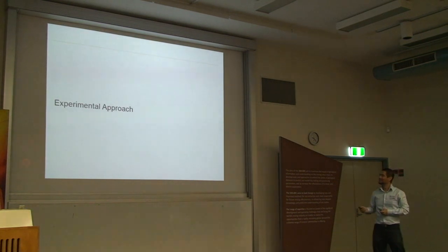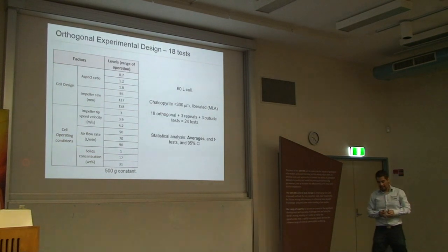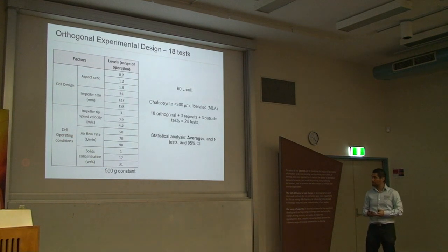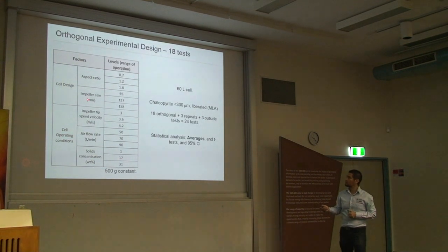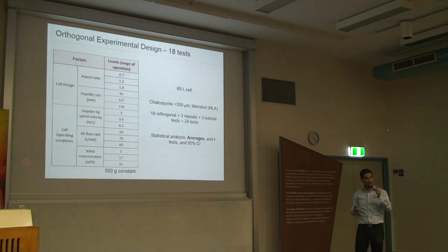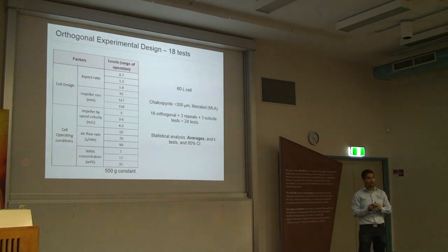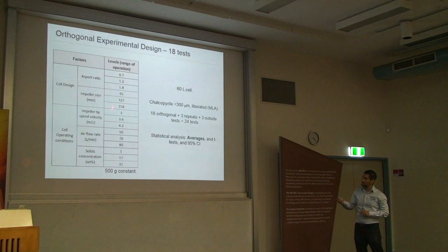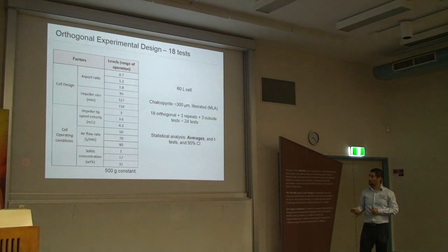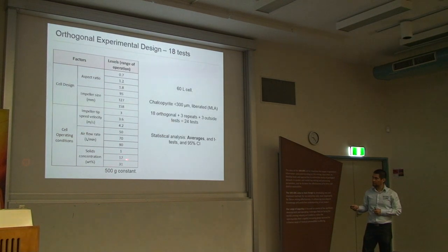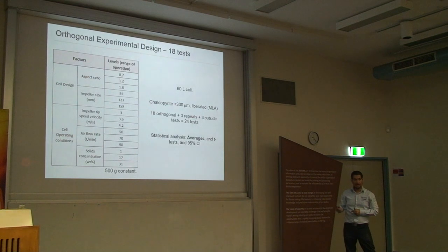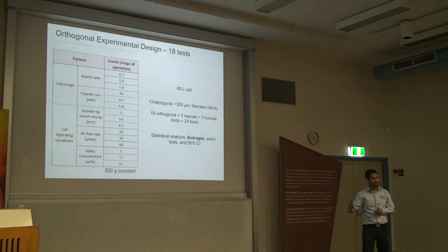For the experimental approach, after preliminary testing we chose two design factors: aspect ratio and impeller size — and three operating parameters: impeller speed, gas flow rate, and solid concentration. All factors were measured at three levels: low, mid, and high. The solid concentration used 500 grams total; the difference at 74% and 31% was the addition of silica to increase the viscosity effect. Tests were performed in a 60-litre lab cell using Chaco-Paraguas ore with a top size of 300 microns, and we ran approximately 18 to 200 tests in total including repeats. Statistical analysis included ANOVA, confidence intervals, and t-tests.